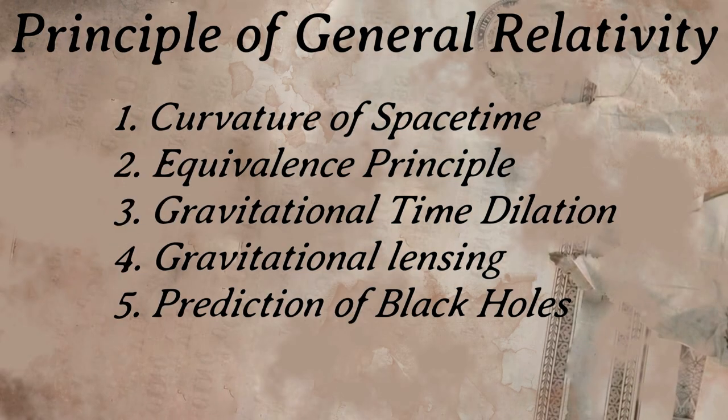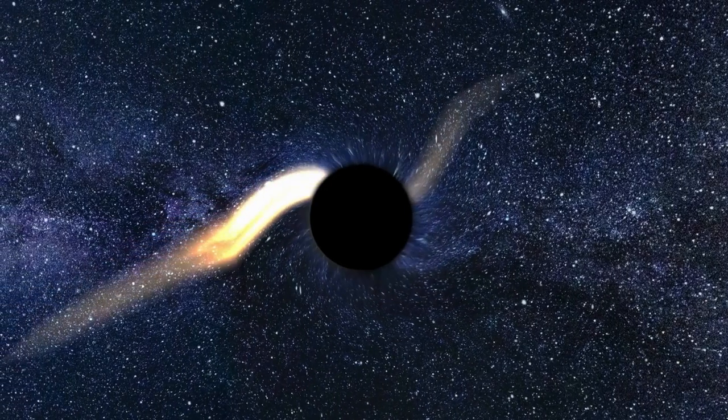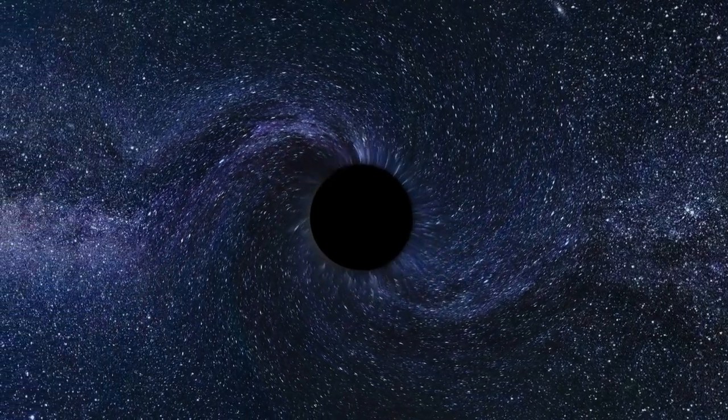Fourth, gravitational lensing. Gravity can bend the path of light. Fifth, prediction of black holes. General relativity predicts the existence of black holes, regions where gravity is so strong that nothing, not even light, can escape.